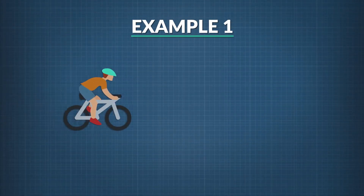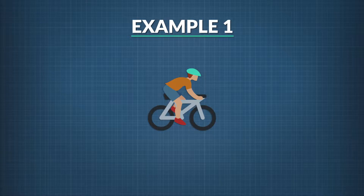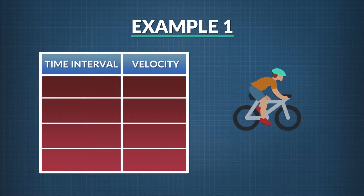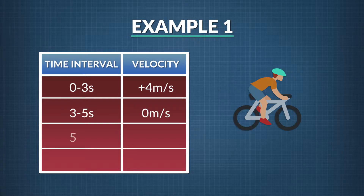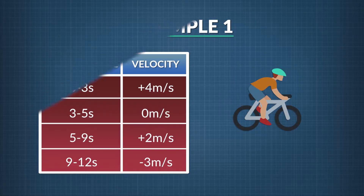A bicycle rider starts from rest and travels on a smooth road. Here are the four stages of the bike rider's journey: from 0 to 3 seconds, a constant velocity of positive 4 meters per second; from 3 to 5 seconds, staying still; from 5 to 9 seconds, a constant velocity of positive 2 meters per second; and from 9 to 12 seconds, a negative velocity of 3 meters per second.